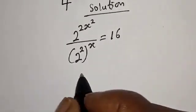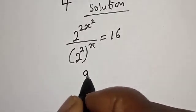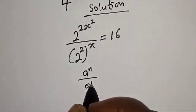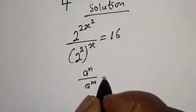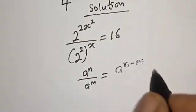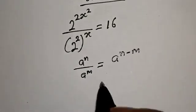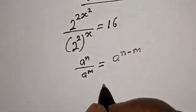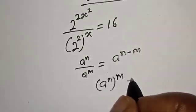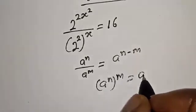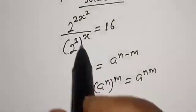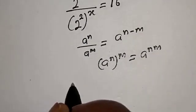Now, if you have a raised to power n over a raised to power m, this is equal to a raised to power n minus m. Also, if you have a raised to power n to the power of m, this is equal to a raised to power n times m.